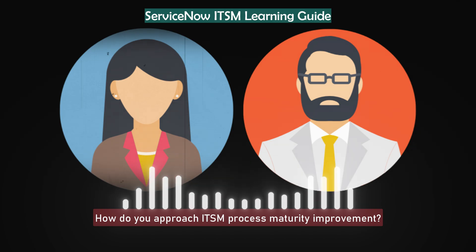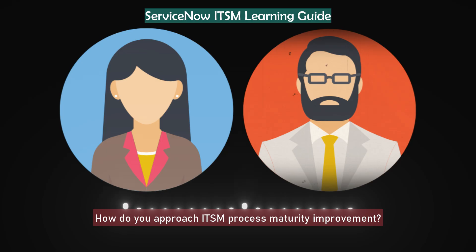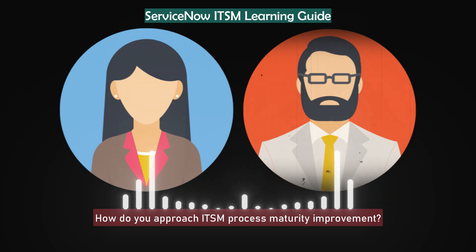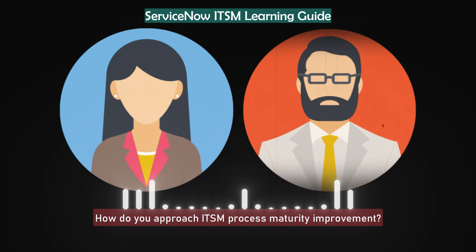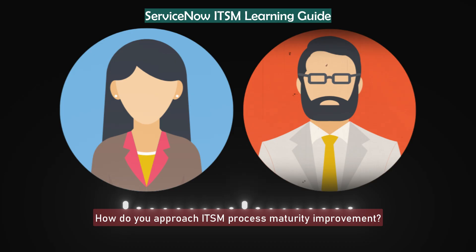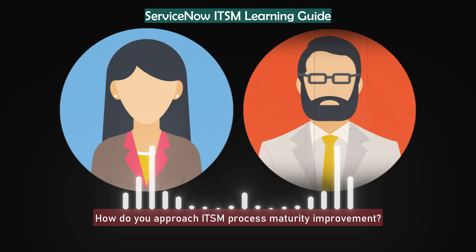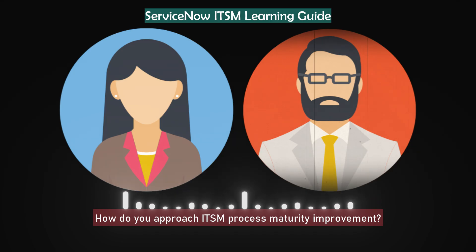How do you approach ITSM process maturity improvement? I never try to mature everything at once. I start with a simple assessment — where we are versus where we want to be. Then I pick one process, say change or problem management, and improve it incrementally. I focus on small wins that show visible impact. I measure adoption through dashboards and feedback, and once that sticks we move to the next process.